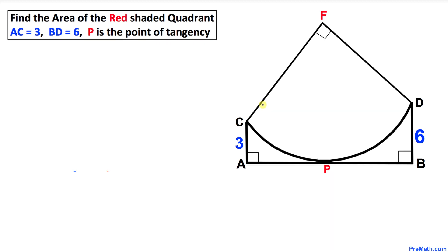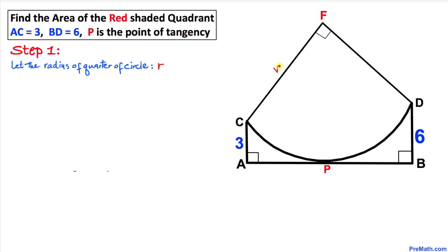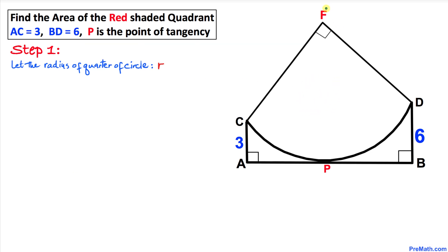So let's get started with our solution. First, let's assume that the radius of this quarter of a circle is lowercase r — so both radii shown are r. We are going to find the value of r in order to calculate the area of this red shaded region. Note that angle F is 90 degrees because we are dealing with the quarter of a circle.